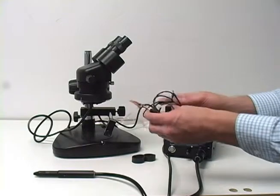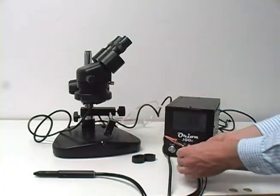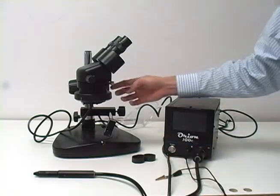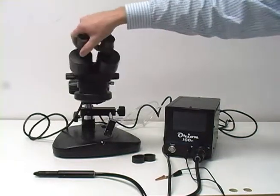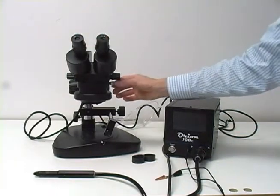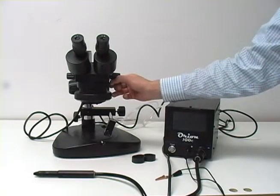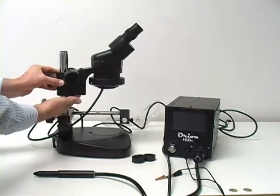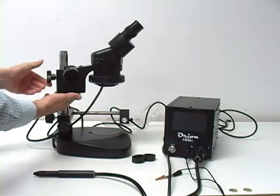Attach the alligator clip. Adjust the microscope head by loosening the silver adjuster screw on the right side of the weld head. Loosen the top adjuster knob on the microscope bar to raise and lower the microscope head.